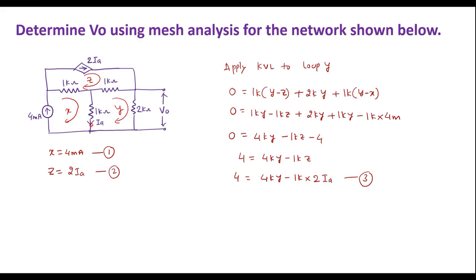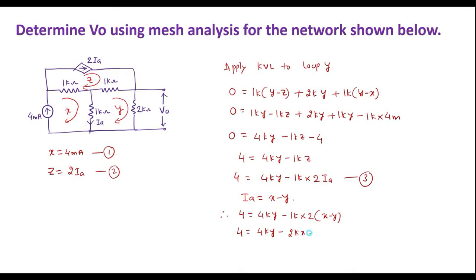Now, IA is the current through the 1 kilo ohm resistor where both X and Y flow, so IA equals X minus Y. Substituting into equation 3: 4 = 4K·Y − 1K·(2(X − Y)) = 4K·Y − 2K·X + 2K·Y = 6K·Y − 2K·X. Since X = 4 milliamps, 2K·X = 8, so we get 4 = 6K·Y − 8.